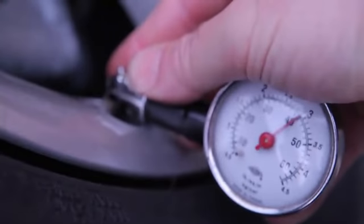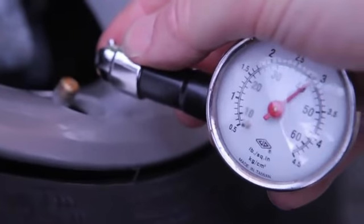Start by removing the dust cap on the valve. Keep it safe in your pocket then attach the gauge firmly and note the reading. Do this with all four wheels while at the same time checking the tyre for any cuts or bulges.